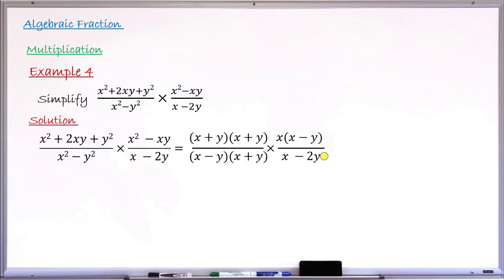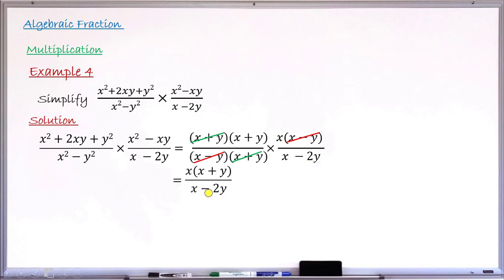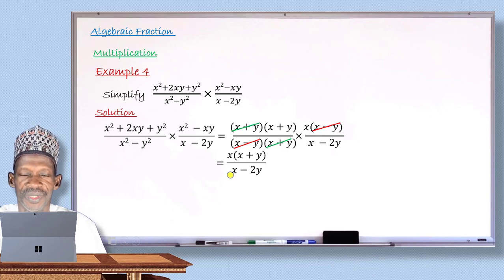Step two: check for common factors. I can see (x + y) in the numerator and (x + y) in the denominator — they cancel. I also see (x − y) in the numerator and (x − y) in the denominator — they cancel too. After canceling, what remains at the numerator level is (x + y) × x, and at the denominator is (x − 2y). We cannot further simplify, so the final result is x(x + y) over (x − 2y).